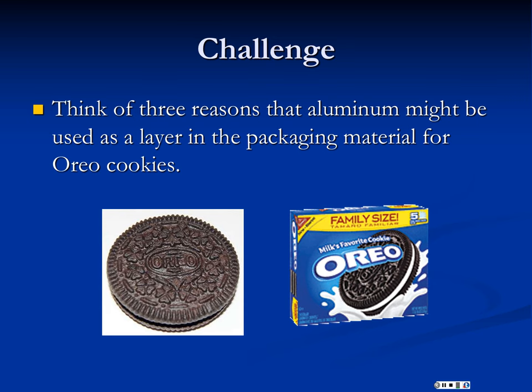There are really three drivers for using aluminum. The first is that you need a barrier material, something to keep oxygen and moisture H2O out of the packaging. Oxygen reacts with molecules that give food its flavor, and they also react with vitamins and minerals. Water molecules can penetrate many kinds of packaging and make the cookies soggy.